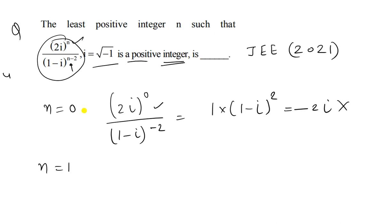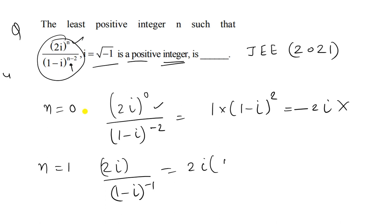Similarly, let's try n = 1. The numerator becomes 2i, and the denominator becomes (1 - i)^(-1). Multiplying gives 2i into (1 - i), which is also not a positive integer.